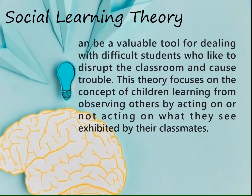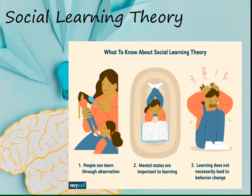Number two is the social learning theory. This is a valuable tool for dealing with difficult students who like to disrupt the classroom and cause trouble. This theory focuses on the concept of children learning from observing others — by acting on, or not acting on, what they see exhibited by their classmates. Key things to know about social learning theory: first, people can learn through observation; second, mental states are important to learning; and third, learning does not necessarily lead to behavior change.